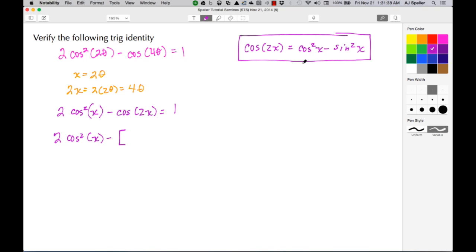And I'm writing in cos²x - sin²x, and again this is equal to 1. And now I'm going to distribute this negative to each one of these terms. So here I have 2 cos²x - cos²x + sin²x, and that there is all set equal to 1.